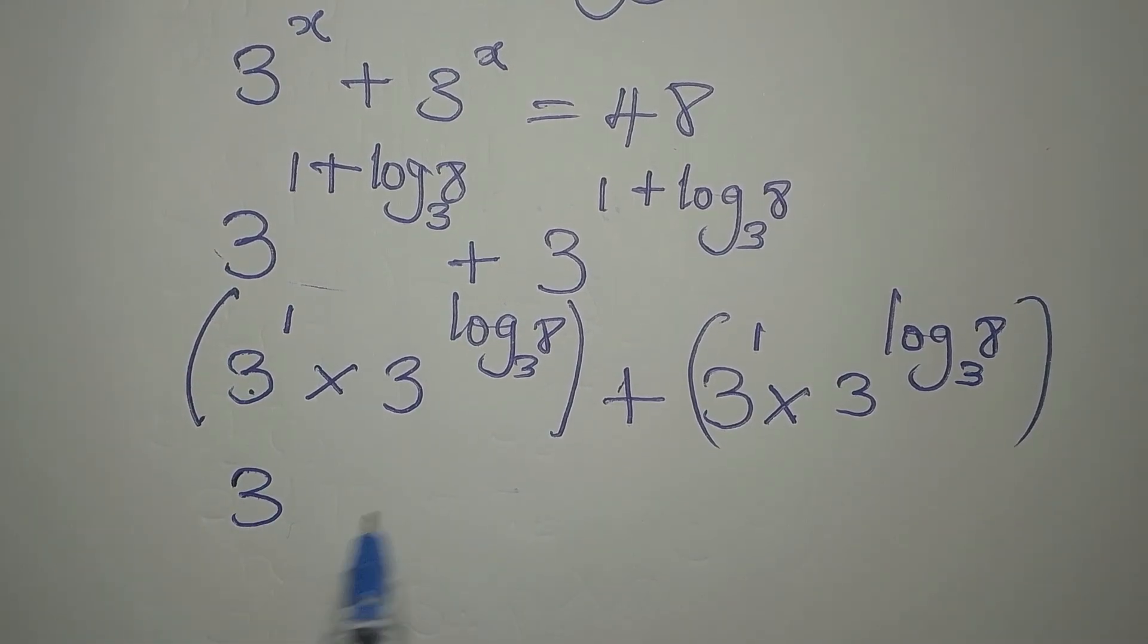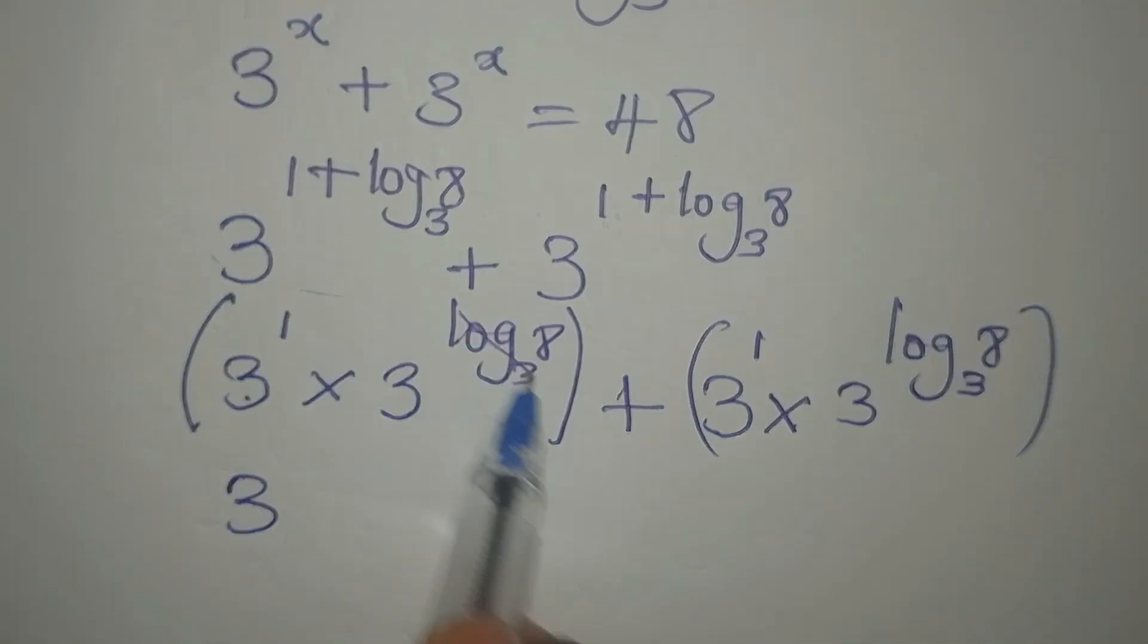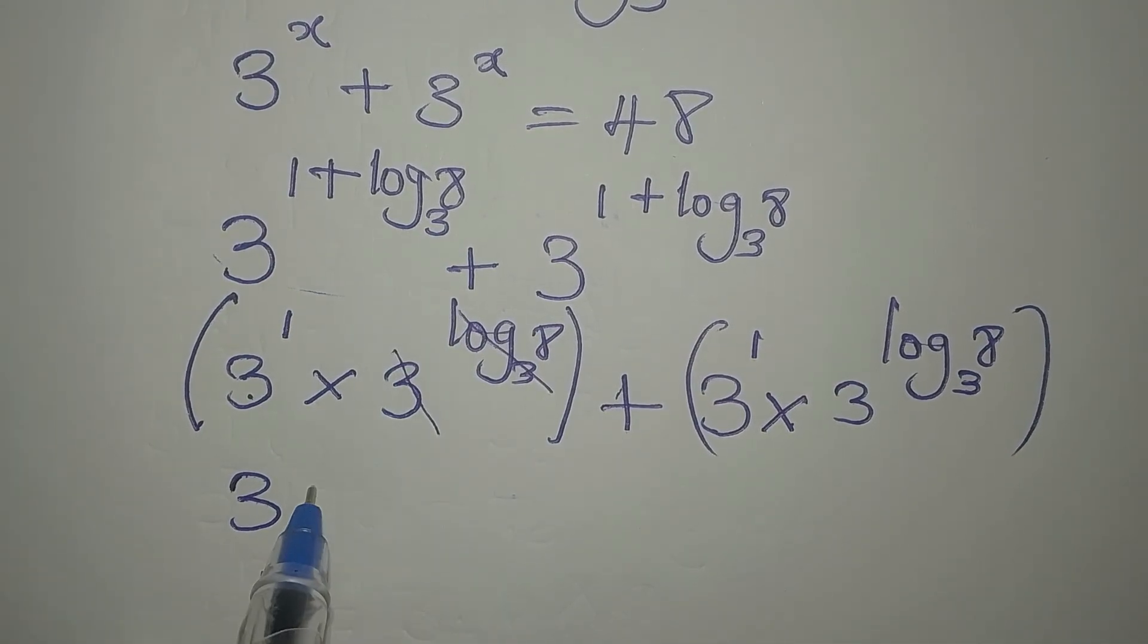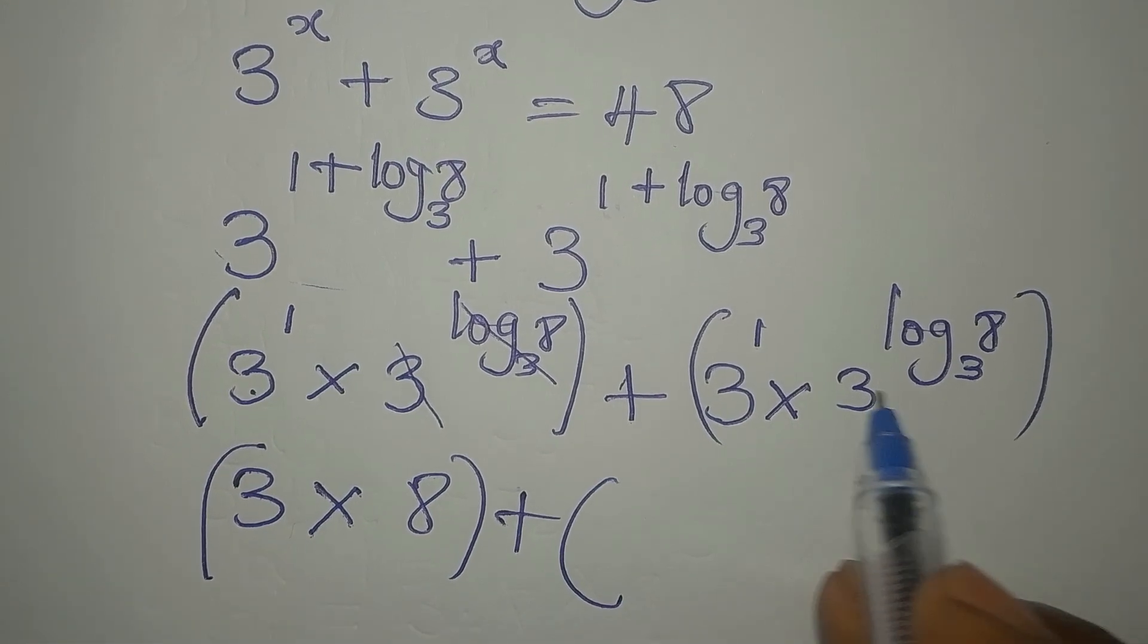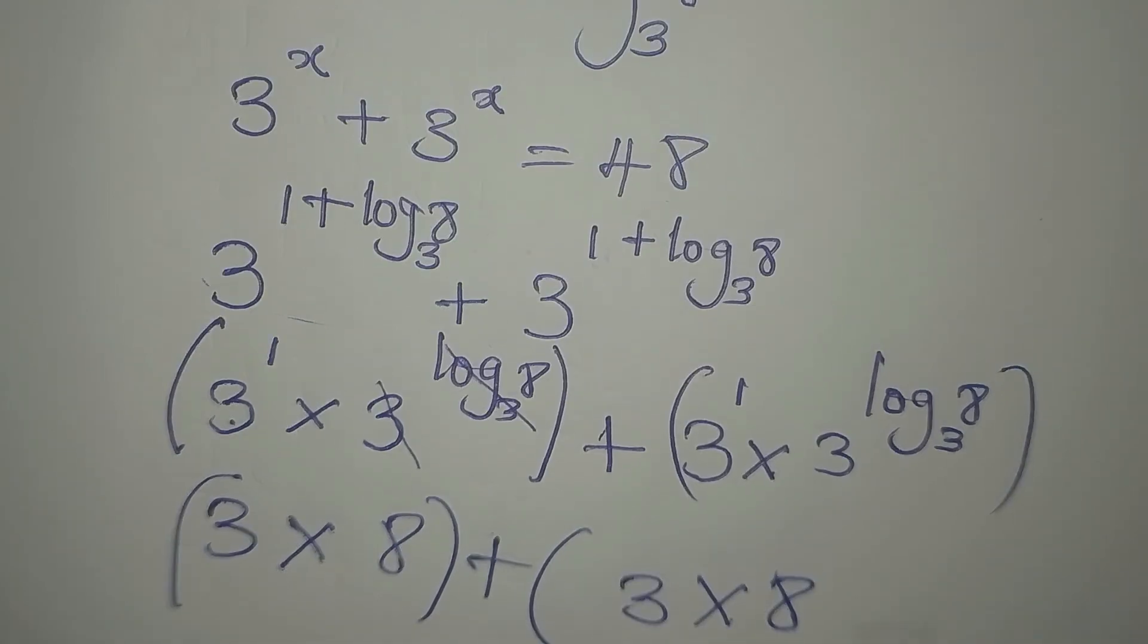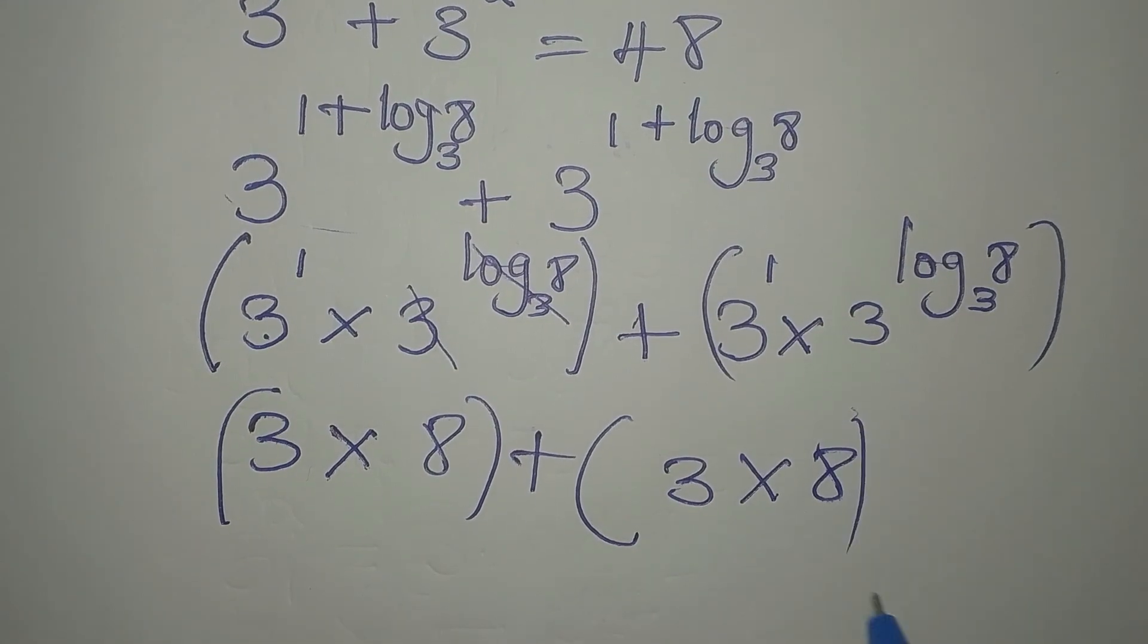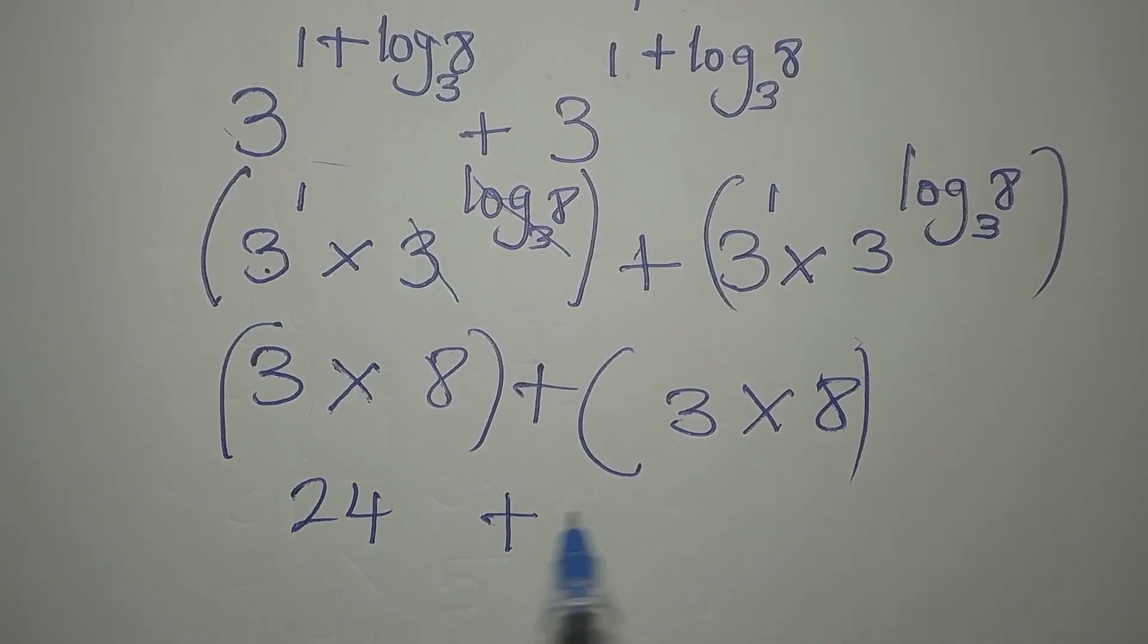This is it. Now what again can we do? This is 3 to the power of 1 is 3. 3 to the power of log 8 to base 3, this and this can go, so we multiply this by 8, then plus what we have here, we have 3 again times 8.